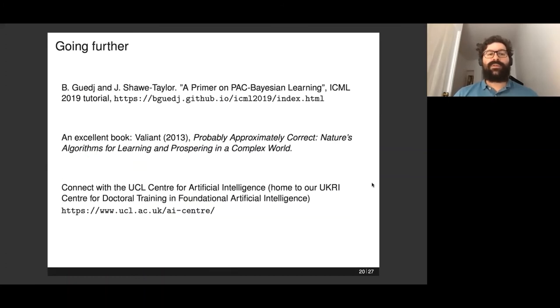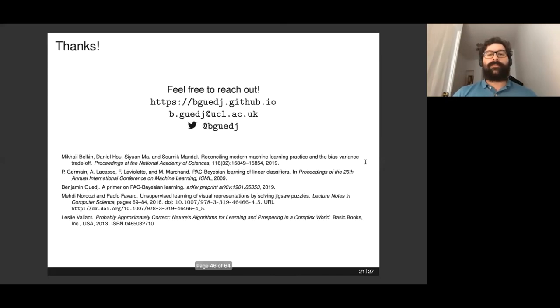If you'd like to go further, there's the ICML 2019 tutorial I was mentioning earlier that I gave with John Shawe-Taylor last year. You can access the slides and recording on that link. I would also recommend a fantastic book from Leslie Valiant. Remember, Valiant is responsible for that acronym PAC, Probably Approximately Correct, and he's written this excellent book which was published in 2013. You can read this as a novel. It's fascinating. Obviously, you're very welcome to connect with the UCL Centre for Artificial Intelligence. I should also mention that if you're looking for master programs or PhD programs, the AI Centre at UCL is the home to our UKRI Centre for Doctoral Training in Foundational Artificial Intelligence. You're welcome to get in touch if you're interested. Thank you very much for attending. Feel free to reach out. You can follow me on the following links. Thanks again.